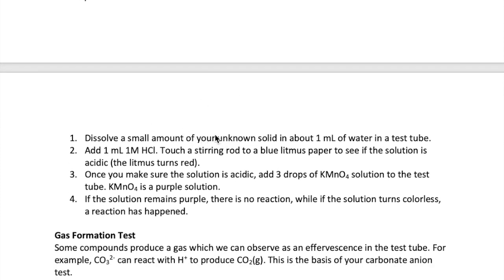To do this test, you first dissolve a small amount of your unknown solid in one milliliter of water. Add one milliliter of one molar HCl and check with litmus to make sure that the solution is acidic, and then add three drops of potassium permanganate, which is a purple solution. Then mix this with a stirring rod and see what happens. If the solution stays purple, that means there's no reaction, and so that means what you have is Fe3+, in this case. If the color of the solution changes to colorless, that means a reaction occurs, and you originally have Fe2+. You can do this test for anything that has two oxidation states. For example, copper plus and copper 2 plus would work as well.